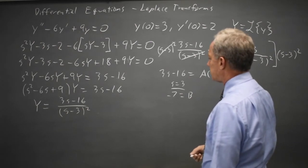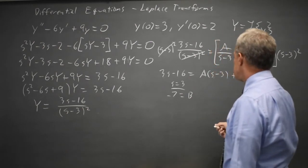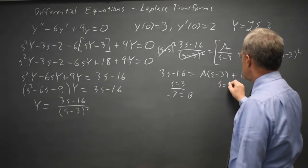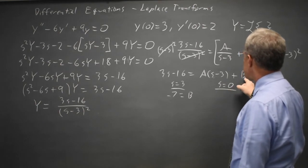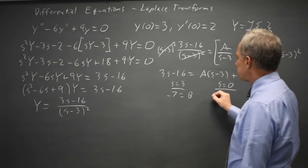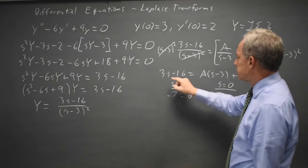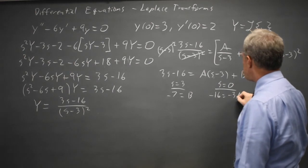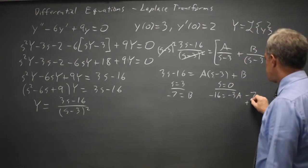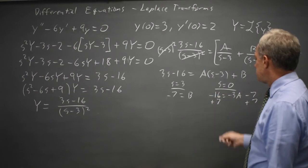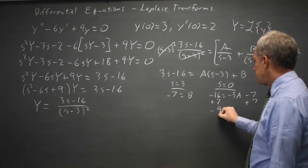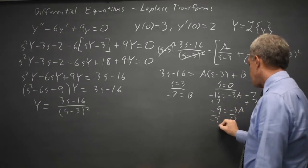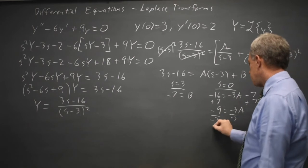And if I substitute in s equals 0 which is a convenient number, at least 0 is easy to work with. So I get 0 minus 16 is negative 16 equals negative 3a plus b where b is negative 7. Add 7 to both sides. Negative 16 plus 7 is negative 9 equals negative 3a divided by negative 3, a equals positive 3.